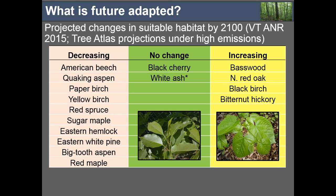One main tool for thinking about the future of our forests and their vulnerability to climate is the tree atlas — a Forest Service product created by Lewis Iverson and others. The tree atlas projects what the future distribution of suitable habitat will be for a given tree species based on climate. By 2100 under a high emissions scenario, the species whose suitable habitat will decrease are really those we characterize as the token northern hardwood species.